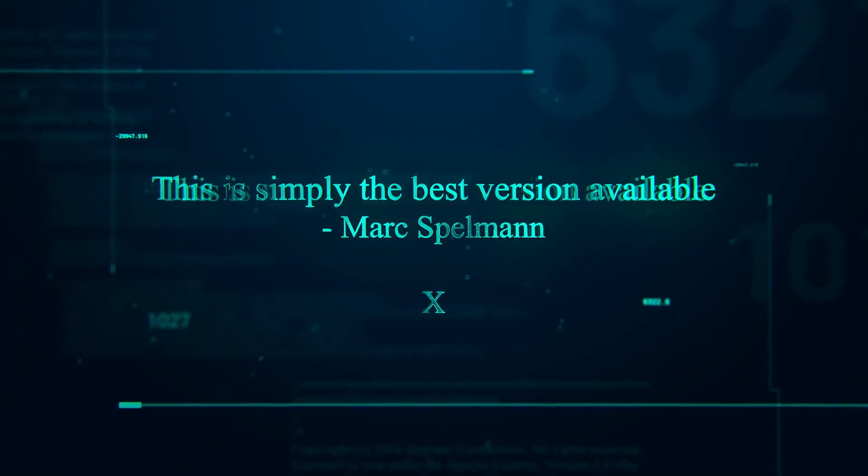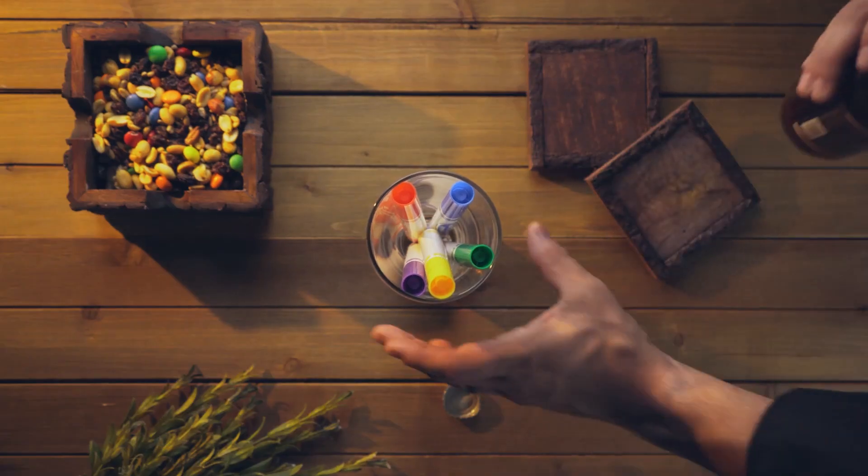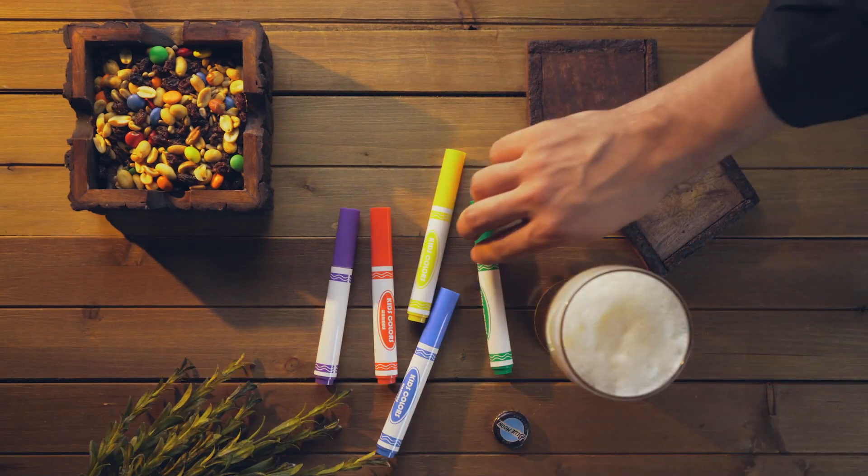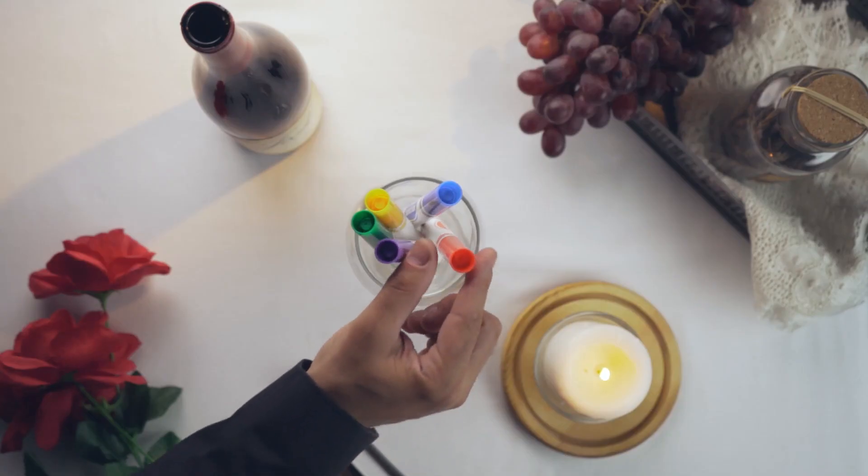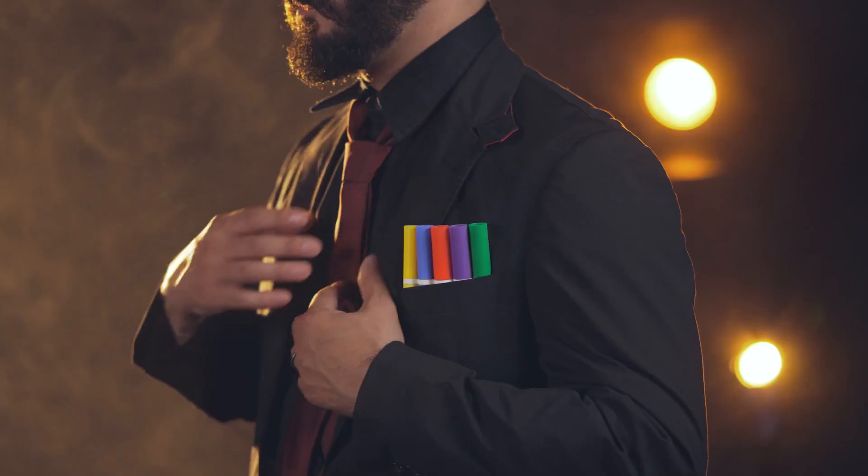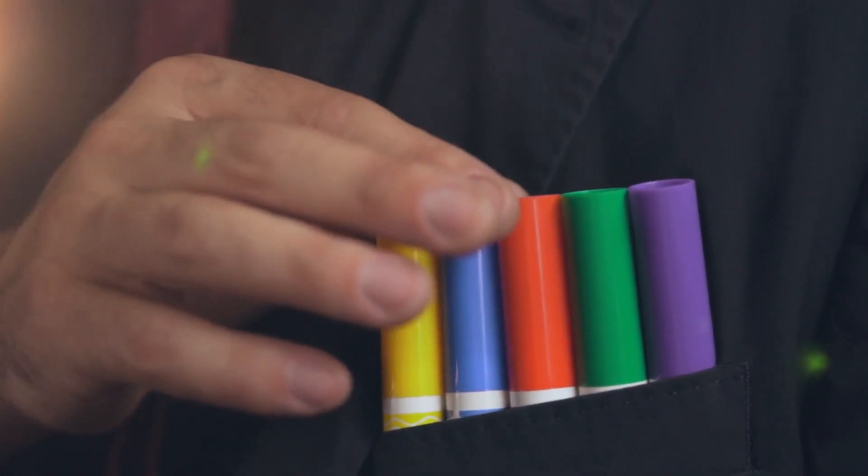In the original Anverdi set, the secret hid in the holder. Now, it cleverly hides in the pen. You can use a glass or no glass on any table, any surface, even from a pocket. It molds to your environment.